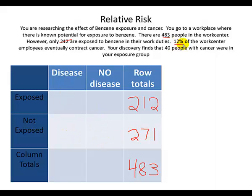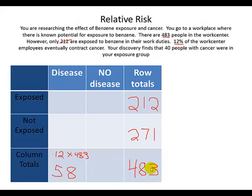Now we need to deal with how many of those had disease or did not. We're going to work with 12% of the work center — that's everyone at the place. If we take 0.12 and multiply that by 483, we get approximately 58 people who had the disease. Because there were 483 people and 58 had the disease, we can determine the number that did not: 483 minus 58 equals 425.